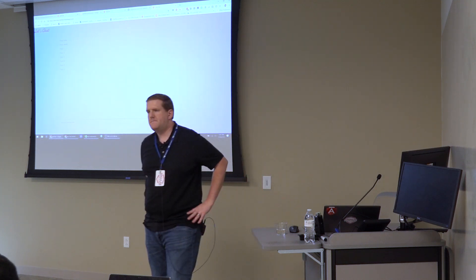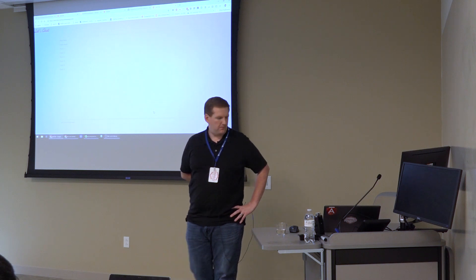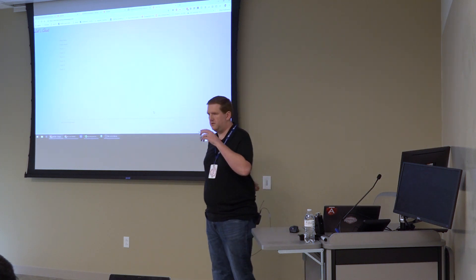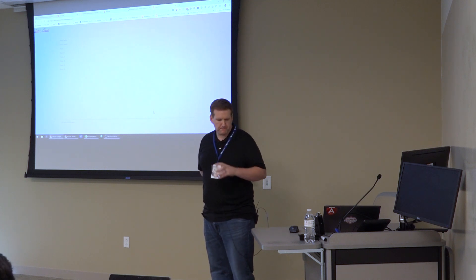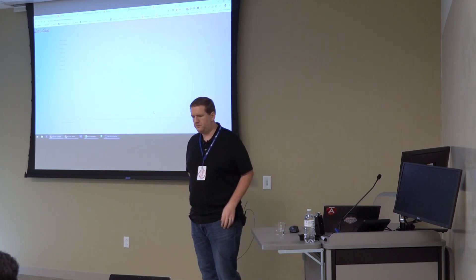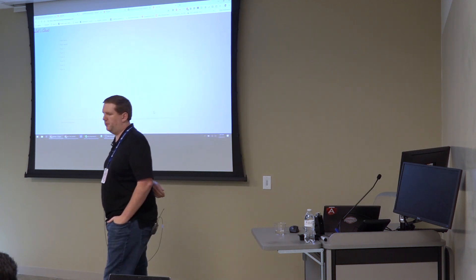Question from the audience: if you have five users all using the same database and you only want to return their data, do you use that callback to filter it out? The answer is it's pretty involved — you start using Firebase rules. You need to partition the structure of your JSON per user, then use Firebase rules to say anyone trying to access this subtree must have the right credentials — if your name doesn't match this part of the subtree, you're not allowed to access that data.